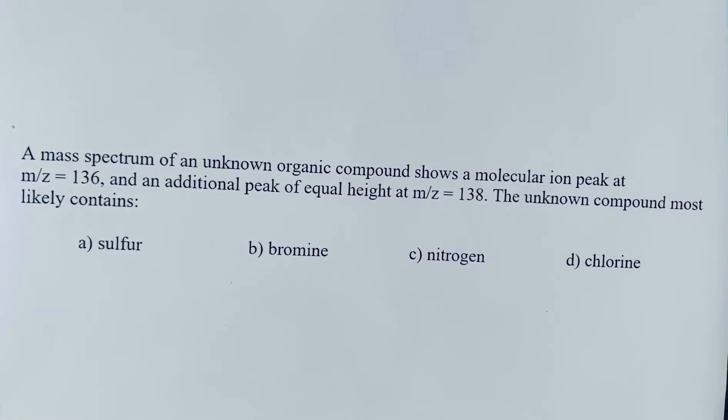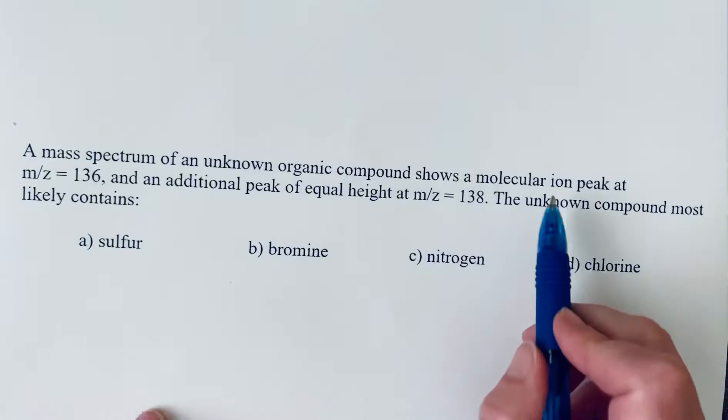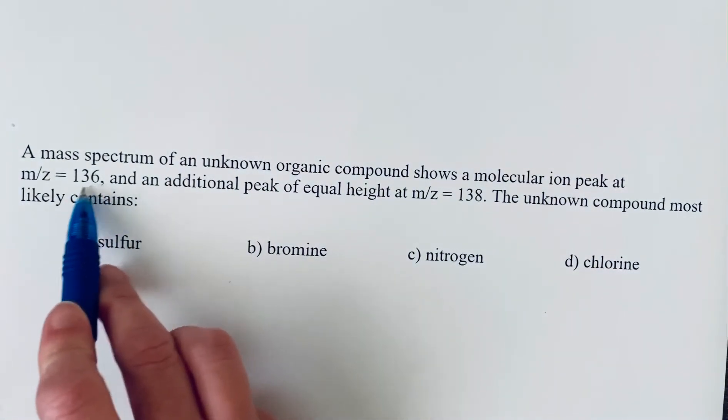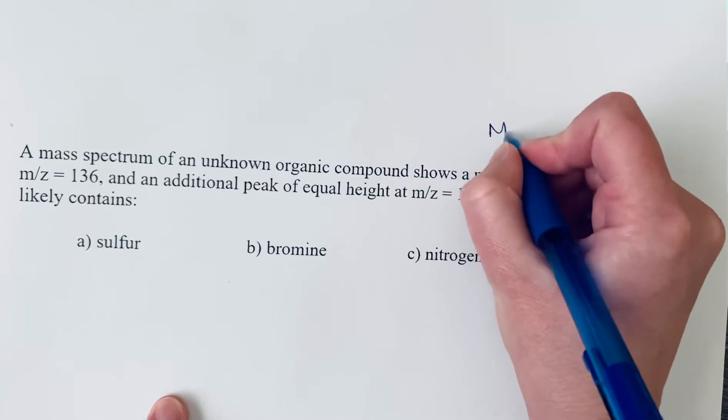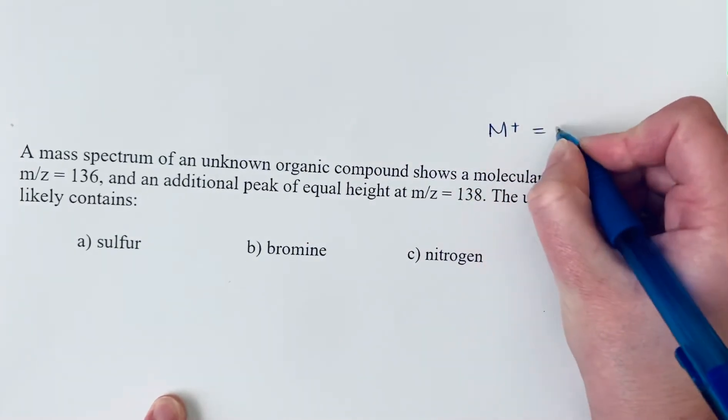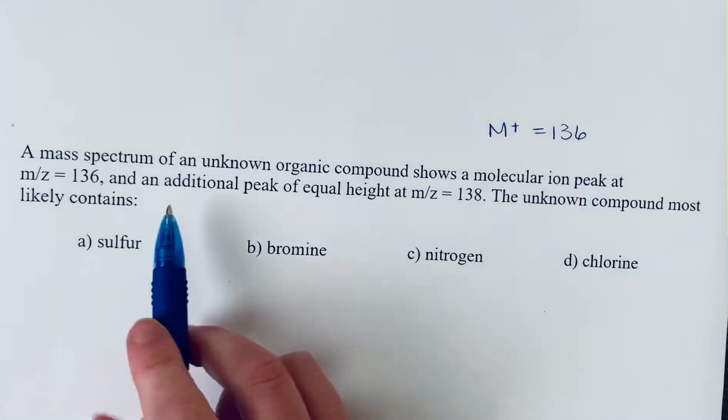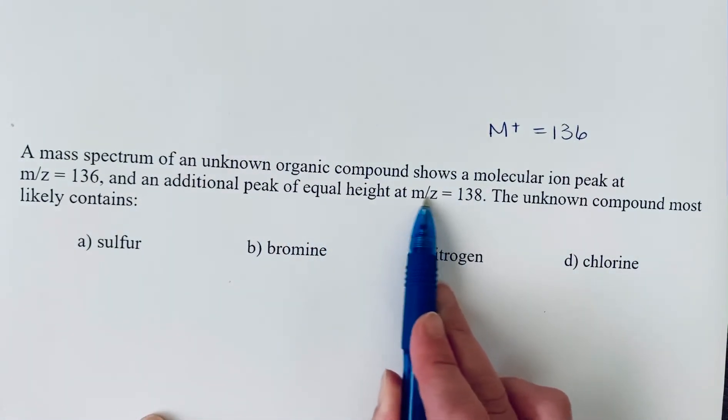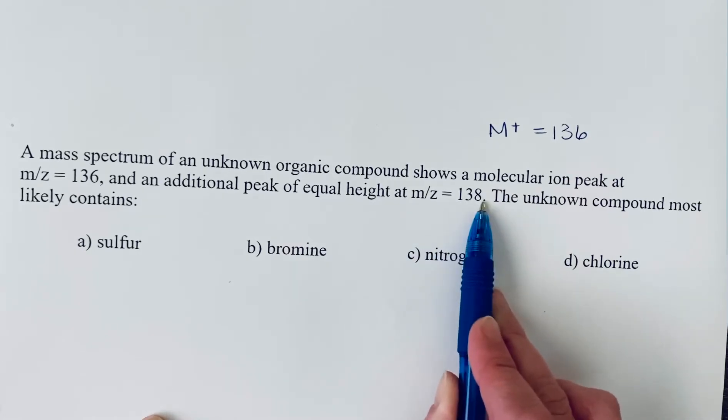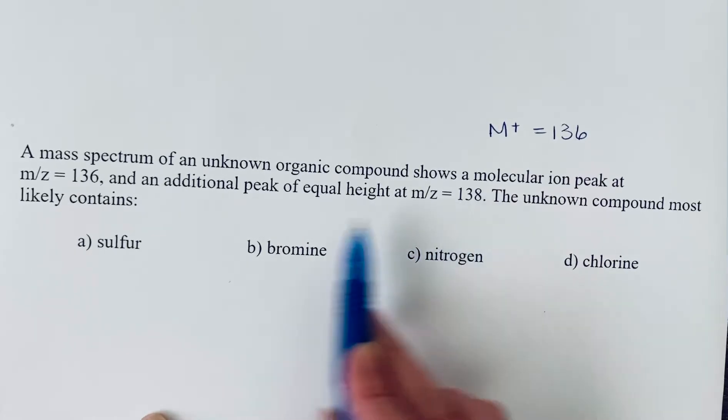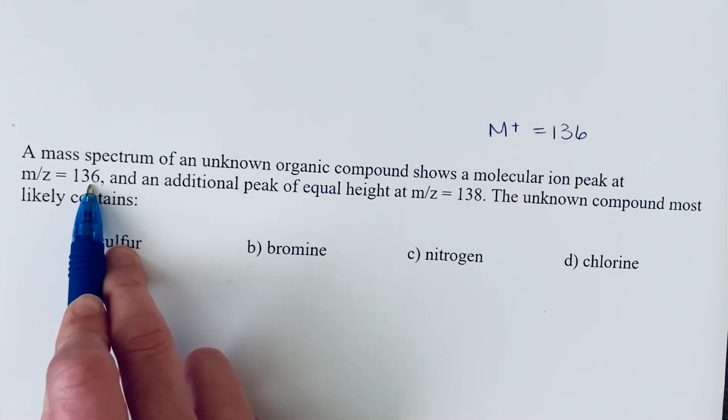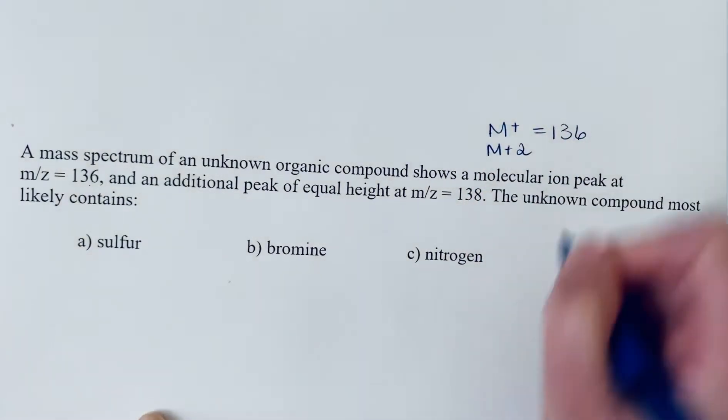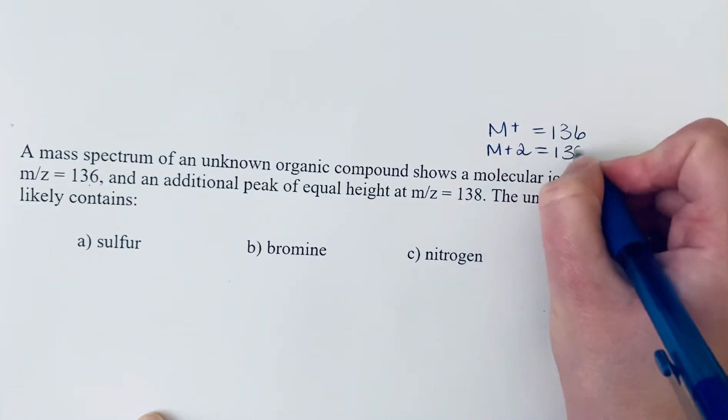A mass spectrum of an unknown organic compound shows a molecular ion peak at m/z = 136, and an additional peak of equal height at m/z = 138. This is two mass units heavier than the molecular ion peak, so we refer to this as an M+2 peak at 138.